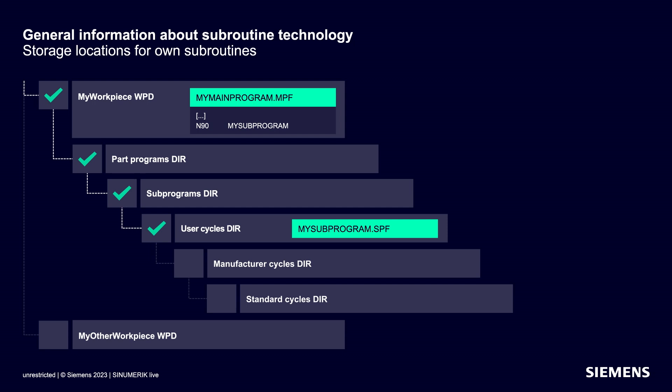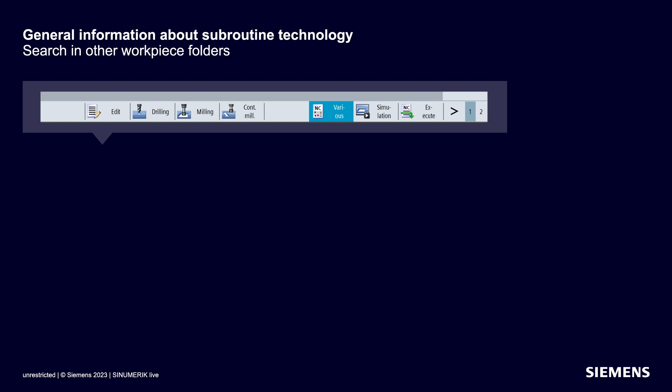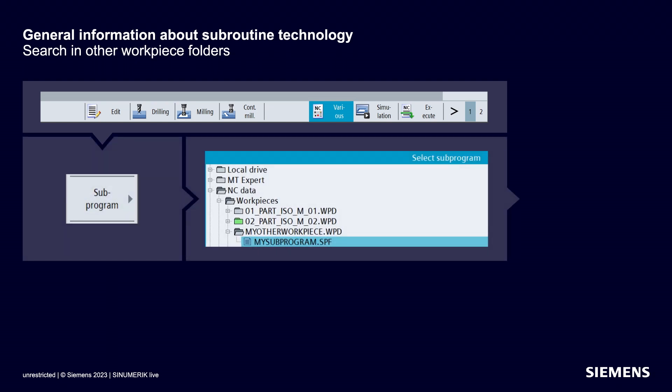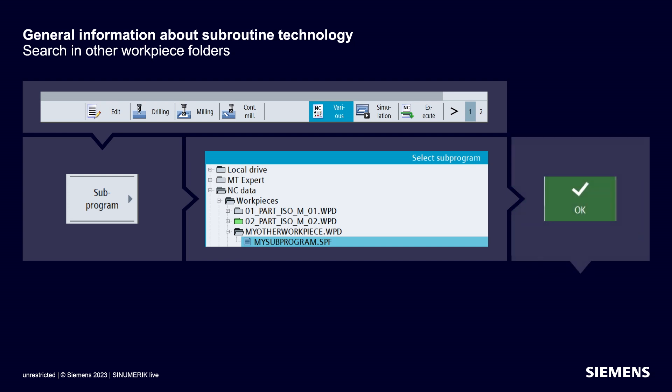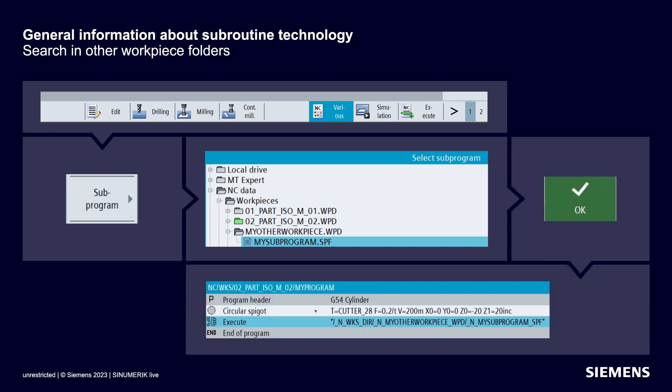The next folder in the sequence is for manufacturer cycles. However, the machine user cannot access this folder, so we can't put the sub-program in there. We can't put it in the last folder either — the folder for standard cycles — because only CINEMERIC itself has access rights here. Moreover, the CNC interpreter never searches in adjacent workpiece folders; if the sub-program is located in another workpiece folder, the path to it must be specified explicitly. Simply select the workpiece folder and sub-program in the CNC editor under Various > Sub-Program and confirm with OK. The sub-program call is now in the program with its path.